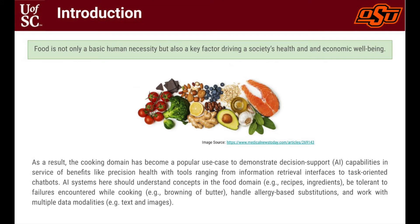Food is an innate psychological need for human life. In addition to this, food is also a key factor driving a society's health and economic well-being. However, maintaining a balanced diet is essential for good health and nutrition as it prevents many chronic non-communicable diseases. The importance of diet and food has attracted increasing attention, leading to the coining of a new term called precise nutrition, which seeks to better the health of a person through precise dietary intake based on unique characteristics of an individual. The process of cooking is a key enabler for precise nutrition, which has led to extensive research in building and deploying decision-support artificial intelligence tools varying from information retrieval using interfaces to task-oriented chatbots.